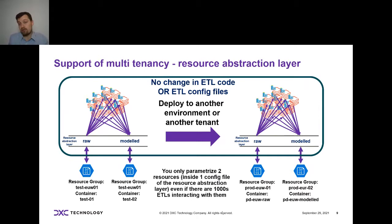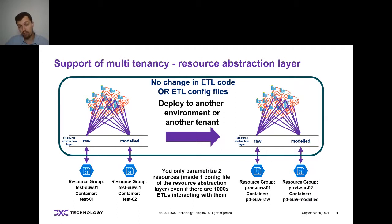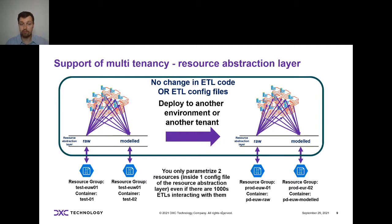The actual job itself doesn't see the difference. This is much better — it will save you weeks of development. In the previous situation you had to parametrize 1,000 config files. Here the ETL config files don't change because they always point to 'raw' and 'modeled' regardless of whether it's production or pre-production. All you have to do is parametrize one config file for the resource abstraction layer — in test you map 'raw' and 'modeled' to one location, in prod you map them to a different location.